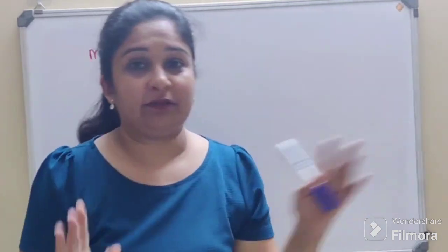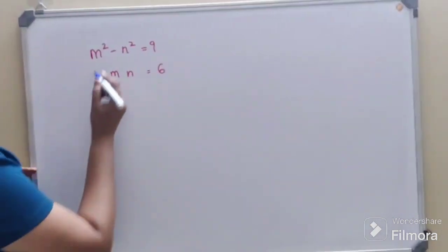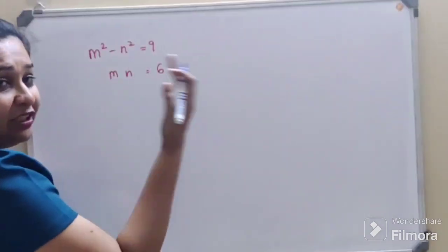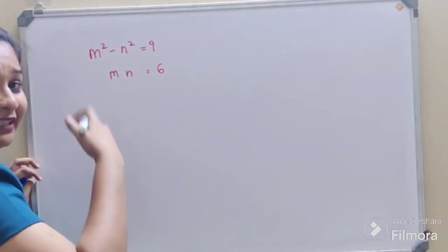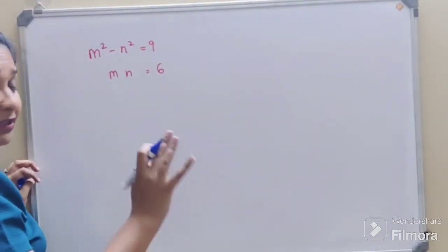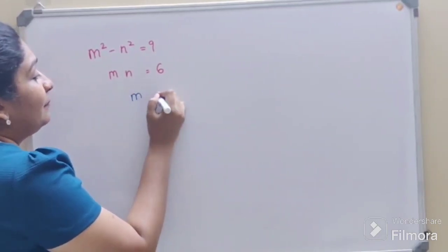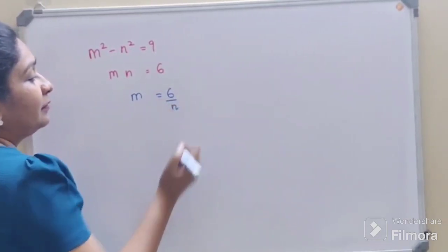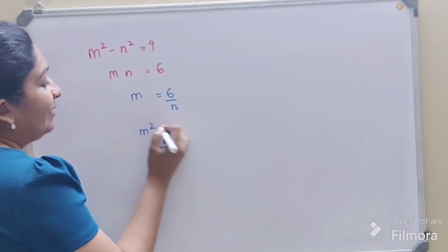So here, see, a lot of people got stuck. They thought that, okay, this is a square minus b square, we can use that, but no you can't. So here what we will do is I can say m is equals to 6 upon n, so m square will be what? 36 upon n square.